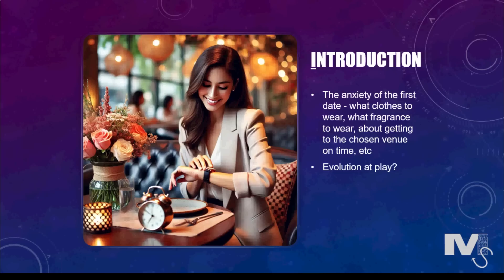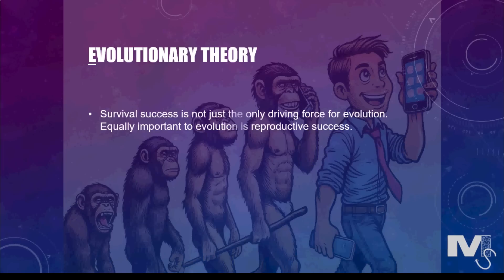So let's start off by looking into the evolutionary theory. We will later circle back to the interesting date example and explore the forces in play. Evolutionary theory clarifies that survival success is not just the only driving force for evolution — equally important is reproductive success. Darwin stated that out of all the traits inherited from parents to offspring, those that aided survival and reproduction are transmitted at greater frequencies than other traits.